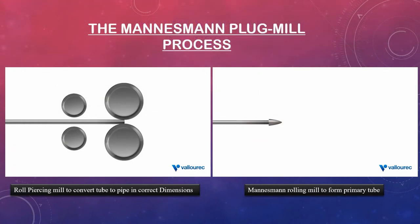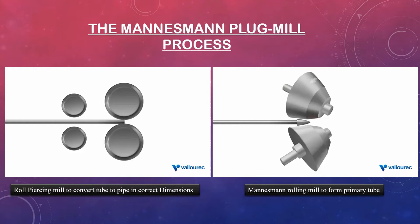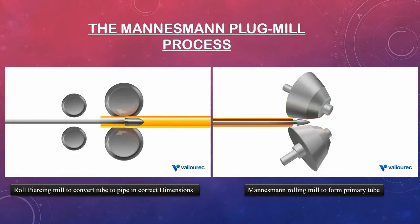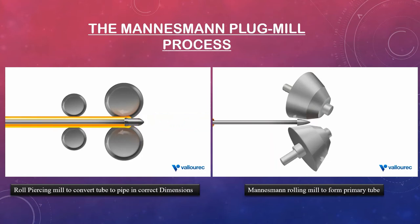Seamless pipe manufacturing has different techniques, such as the plug mill process for making seamless tubing. This process involves forcing a billet between the rolls of a mill so as to pierce the center, then forcing the metal over a mandrel to form the central bore sized for the required dimensions.